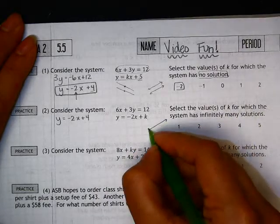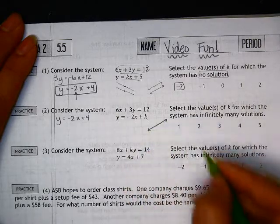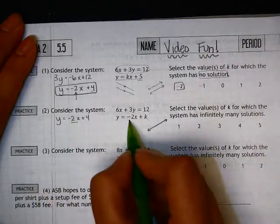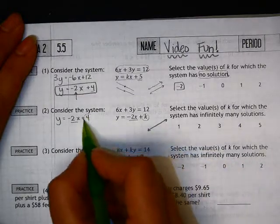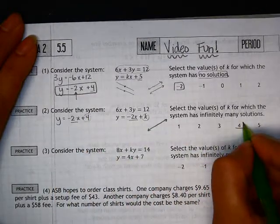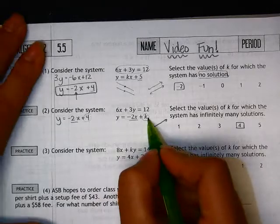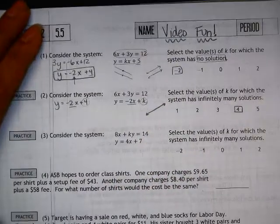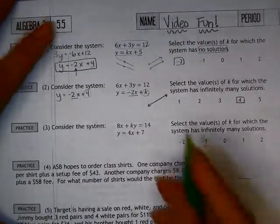Remember, infinitely many solutions means that one line is right on top of the other line. The slopes obviously need to be the same. You can't change that anyway. We're looking at these values here. Well, if it was a 4, then these would be identical, and they would have infinitely many solutions.